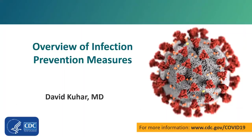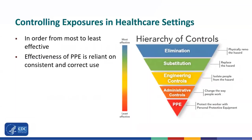Controlling exposures to occupational hazards is a fundamental way to protect healthcare personnel. Conventionally, a hierarchy has been used to achieve feasible and effective controls. This hierarchy of controls, in order of most to least effective, includes elimination, substitution, engineering controls, administrative controls, and finally personal protective equipment, which depends on consistent and correct use.